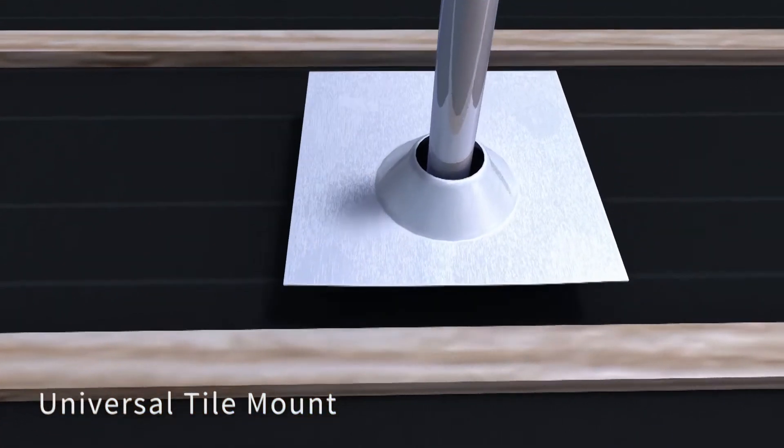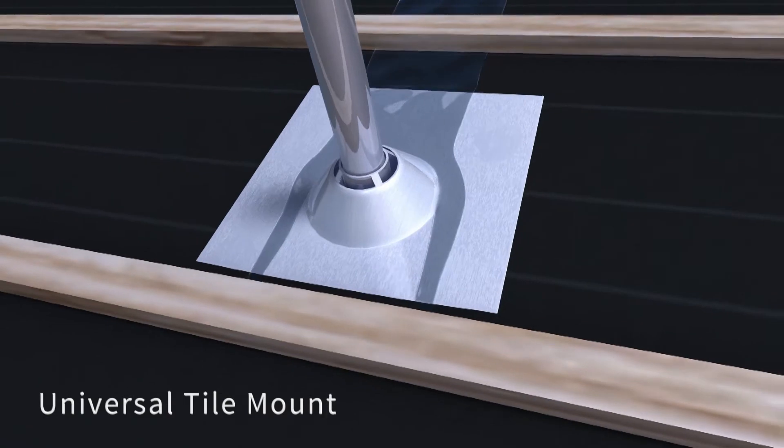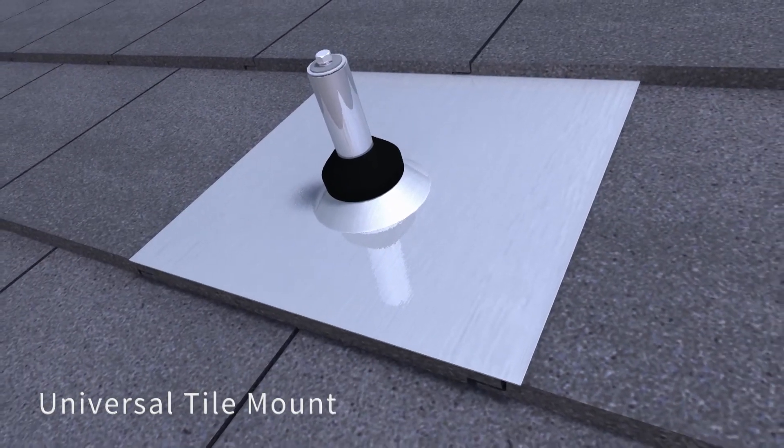And the super-strong Universal Tile Mount comes with both a base level and tile level set of flashings for superior waterproofing.